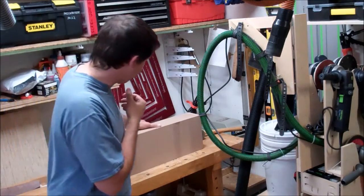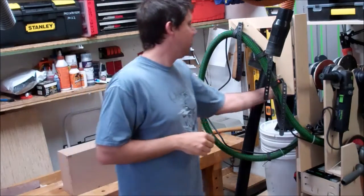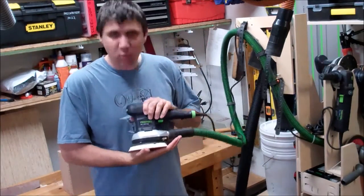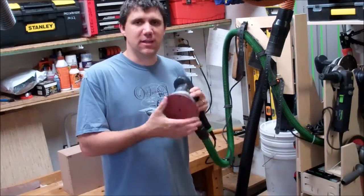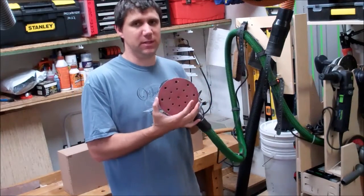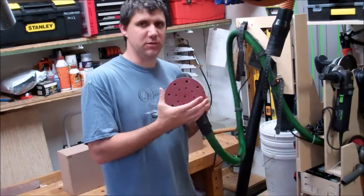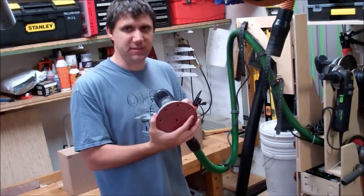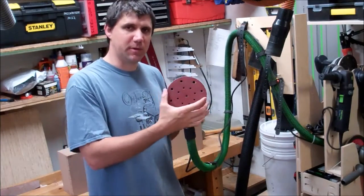What I'm doing right now is sanding it with my ETS-150. It's a 6-inch or 150-millimeter sander, because God forbid we should do things in English measurements. And it's got a 5-millimeter orbit.